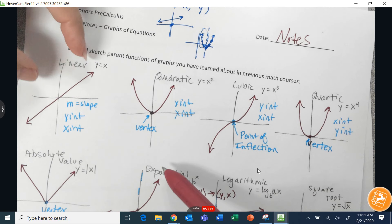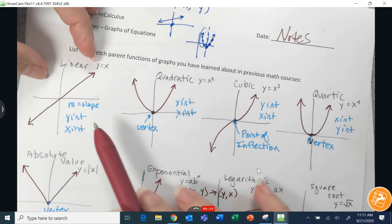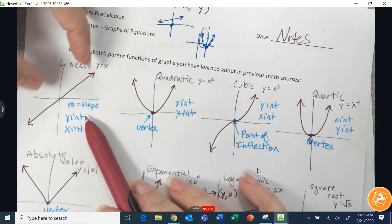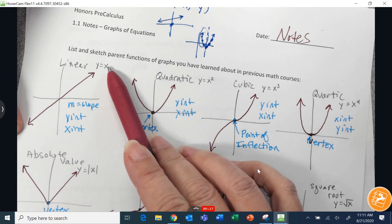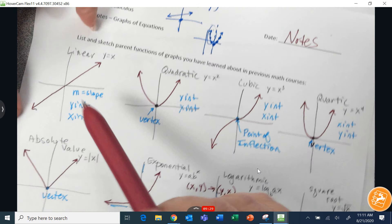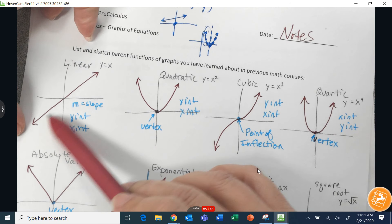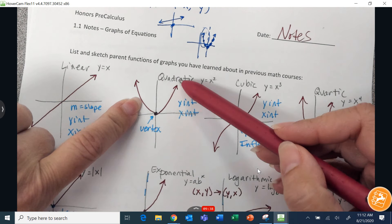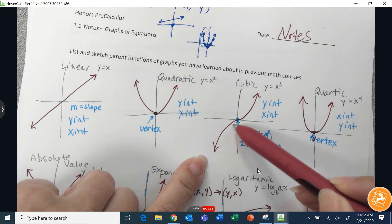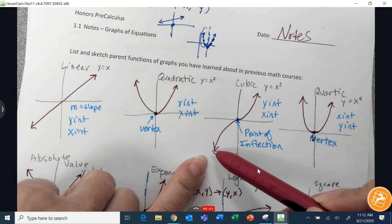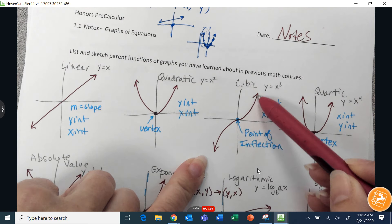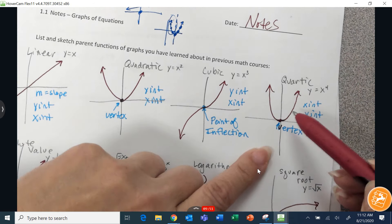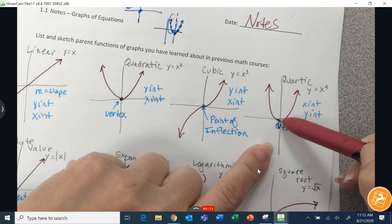So all the odd-powered polynomial functions have the same end behavior. Linear, start low goes high, unless we have a transformation that reflects it. But just talking about the parent function, it is increasing the entire time. However, quadratic decreases and then starts increasing again. Cubic is increasing the entire time. It does go from concave down to concave up, right there at the point of inflection, but it's still increasing the whole time.